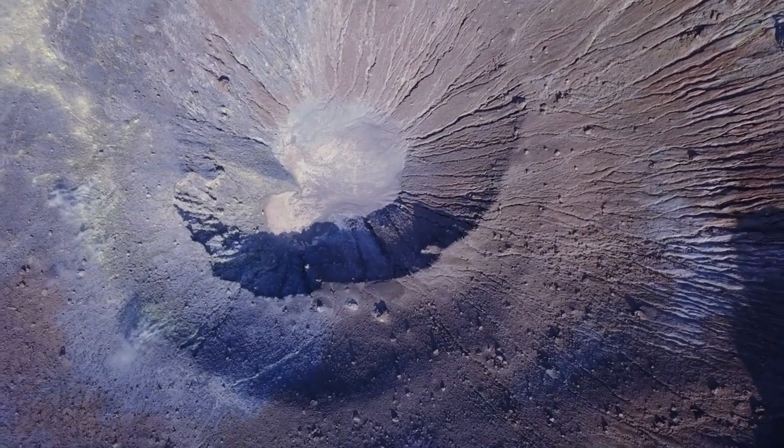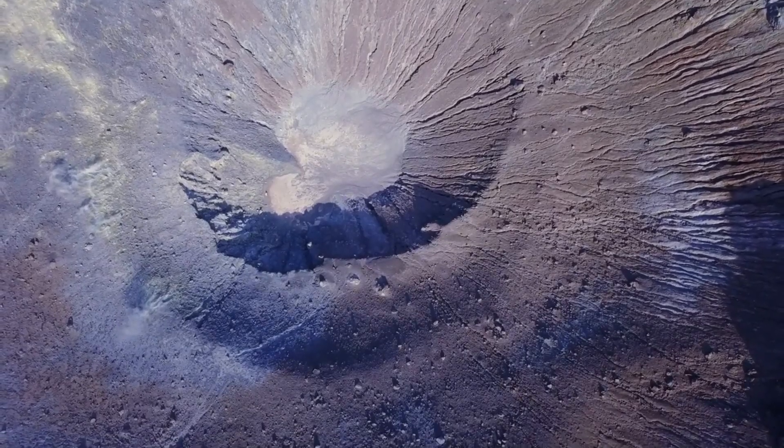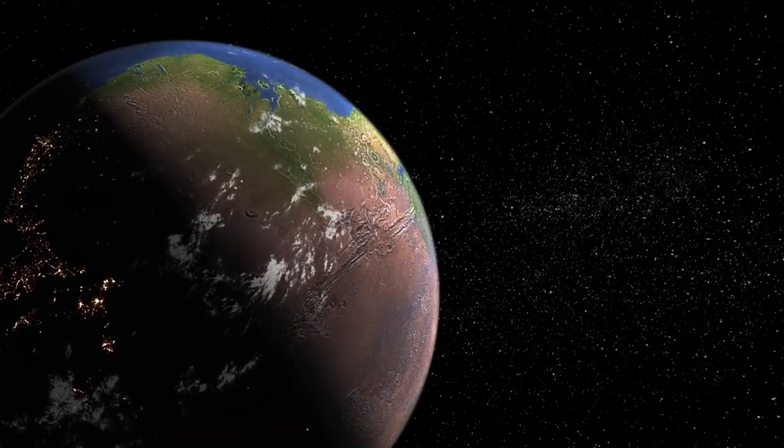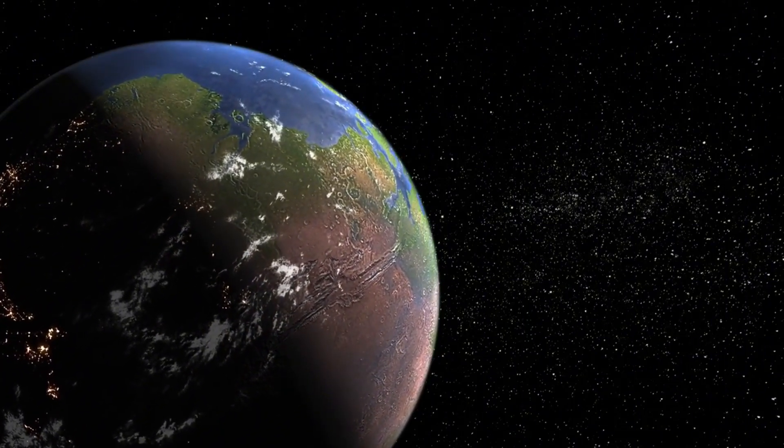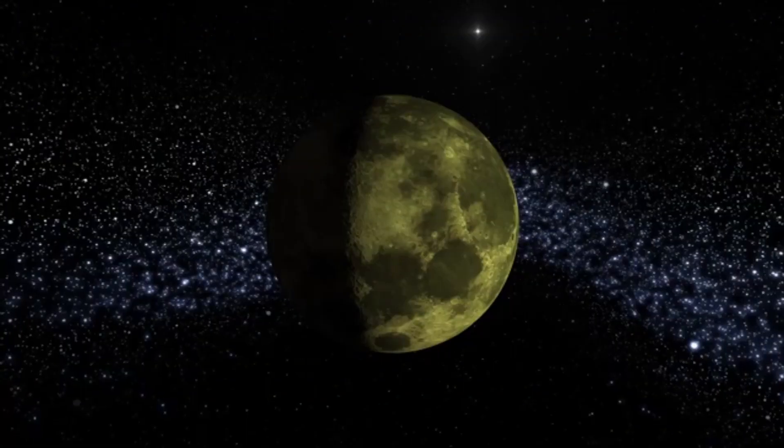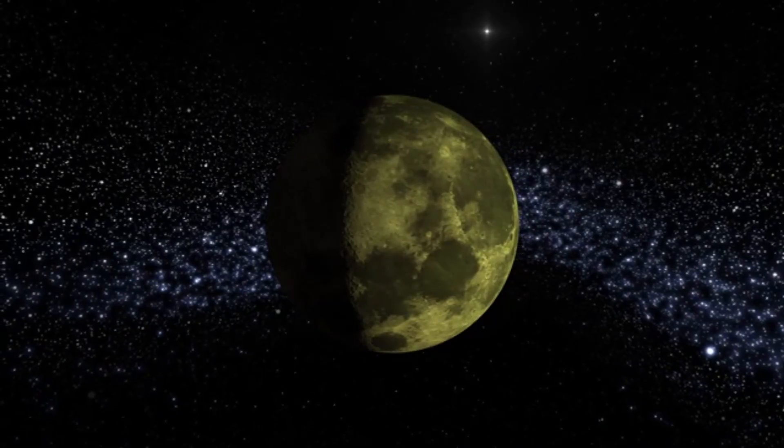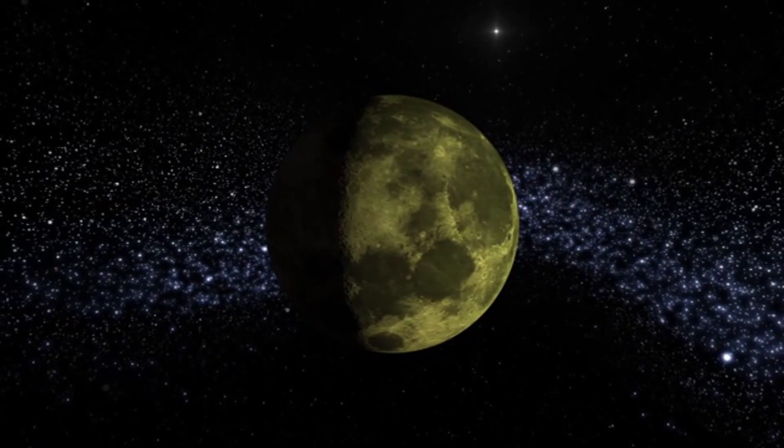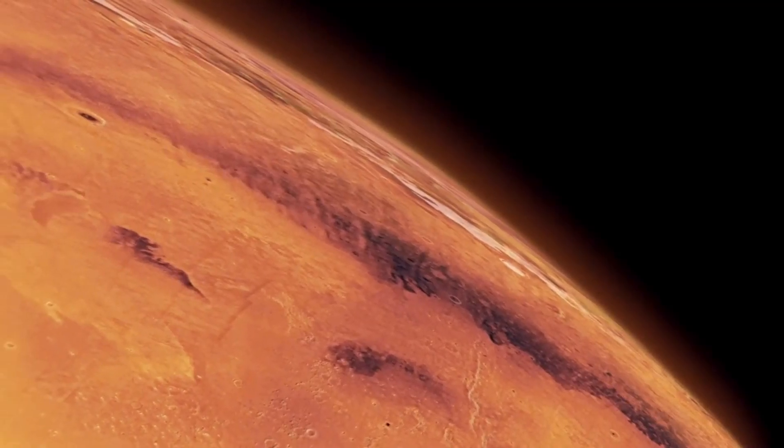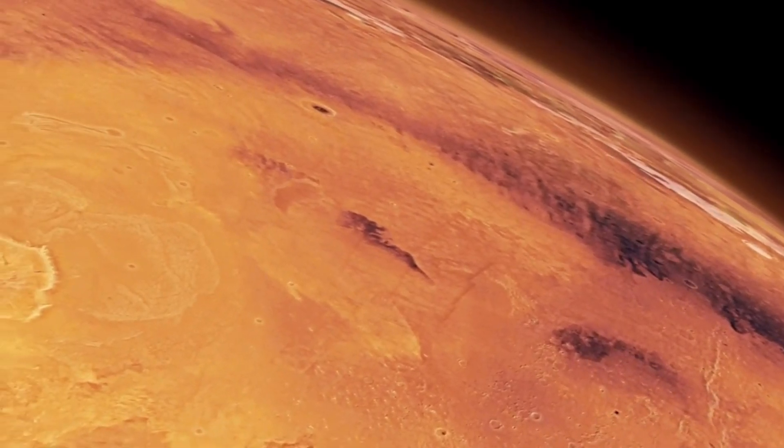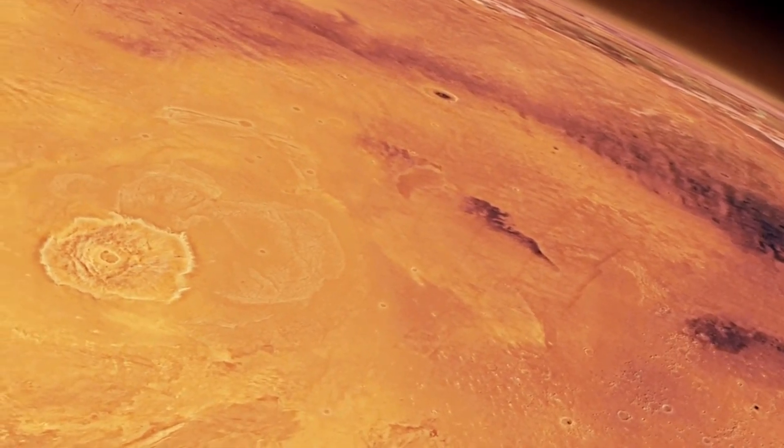Understanding the gravitational impacts of the giant planets on Pluto's orbit provides significant insights into the broader dynamics of the solar system. It shows how the presence and position of each planet can have substantial effects on the stability and behavior of other bodies within the system. So, why are prominent astrophysicists recently raising concerns about a potential collision between Pluto and Neptune?